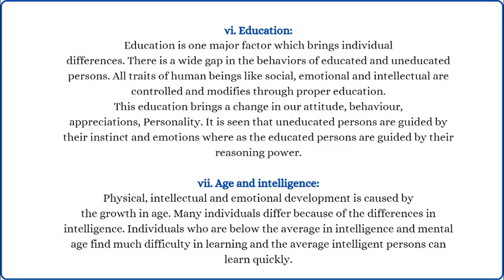Next is education. Education is an important weapon for us today and plays a big role in developing the right things. When we talk about individual differences, an uneducated person and an educated person are very different. An educated person can understand values and make right decisions. An uneducated person doesn't know what is correct and what is not correct according to this modern era.